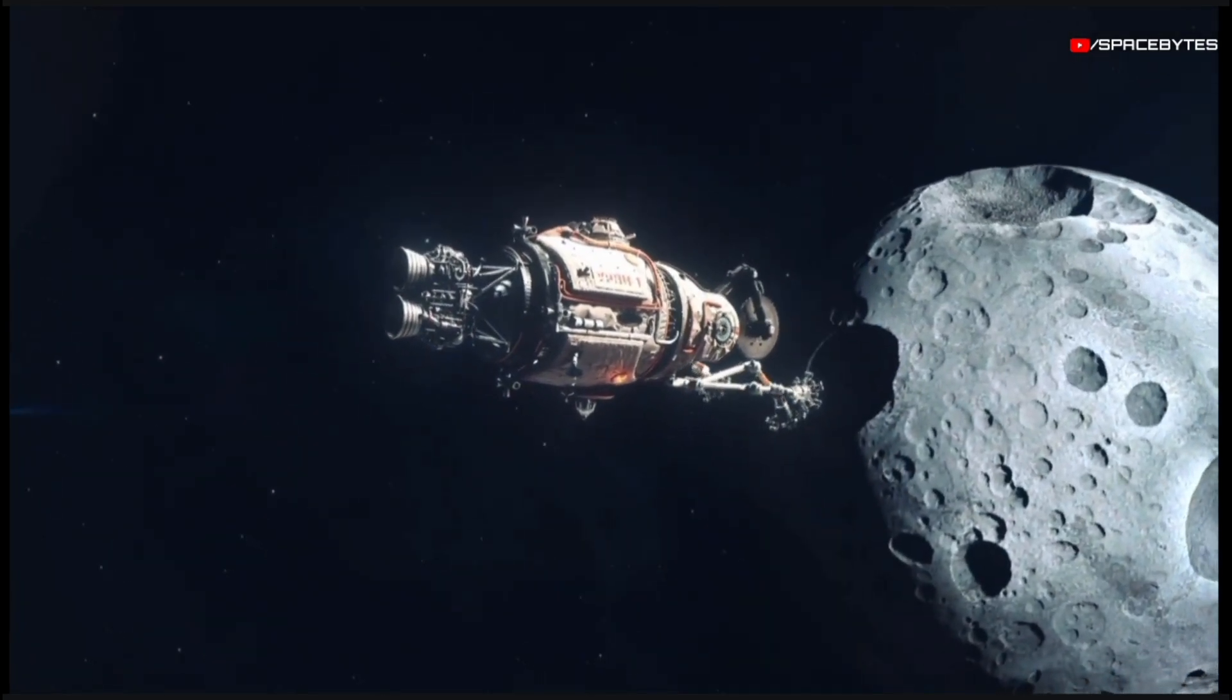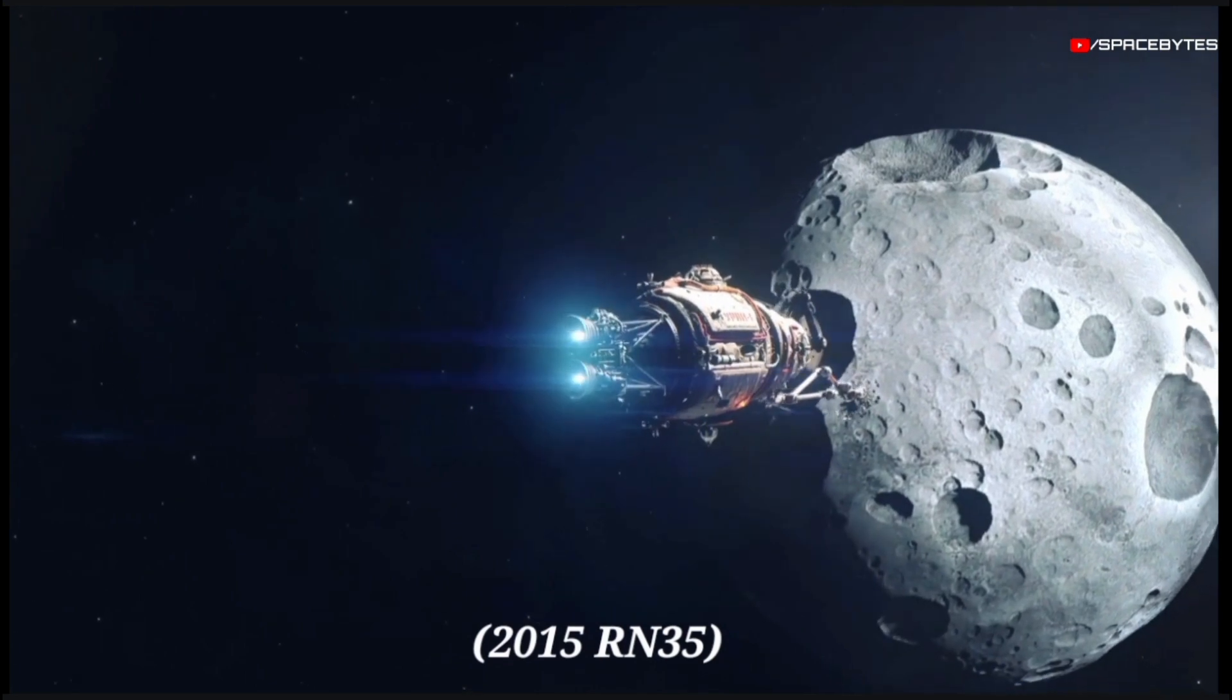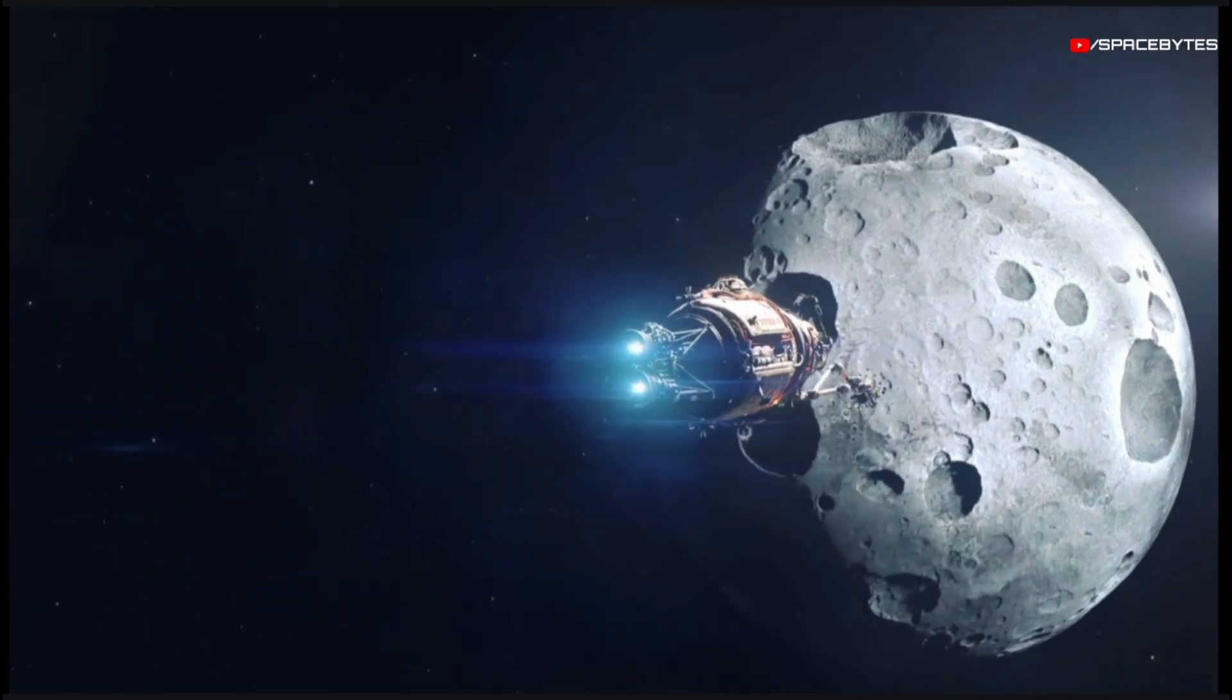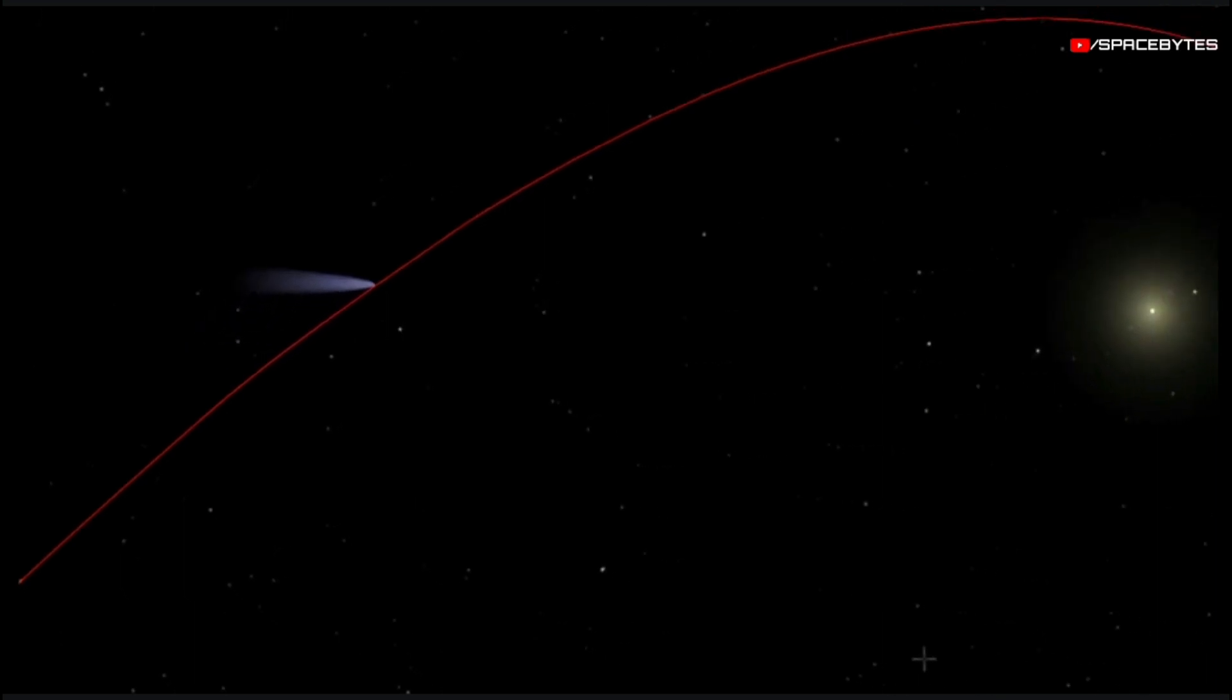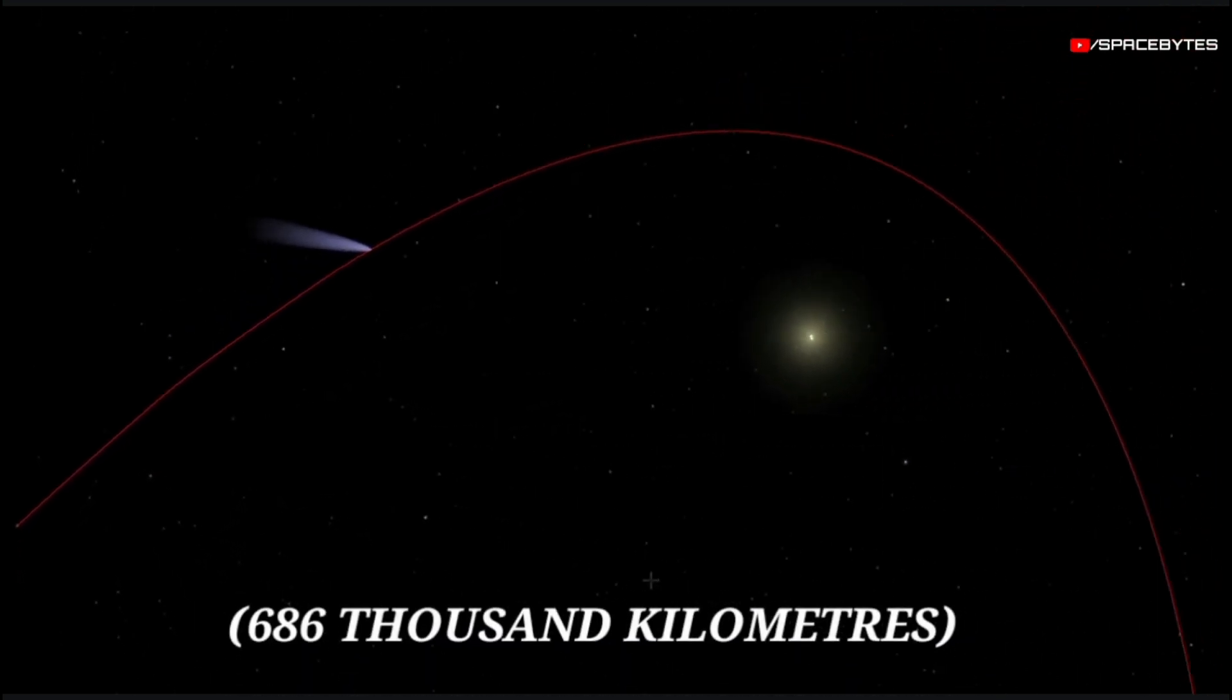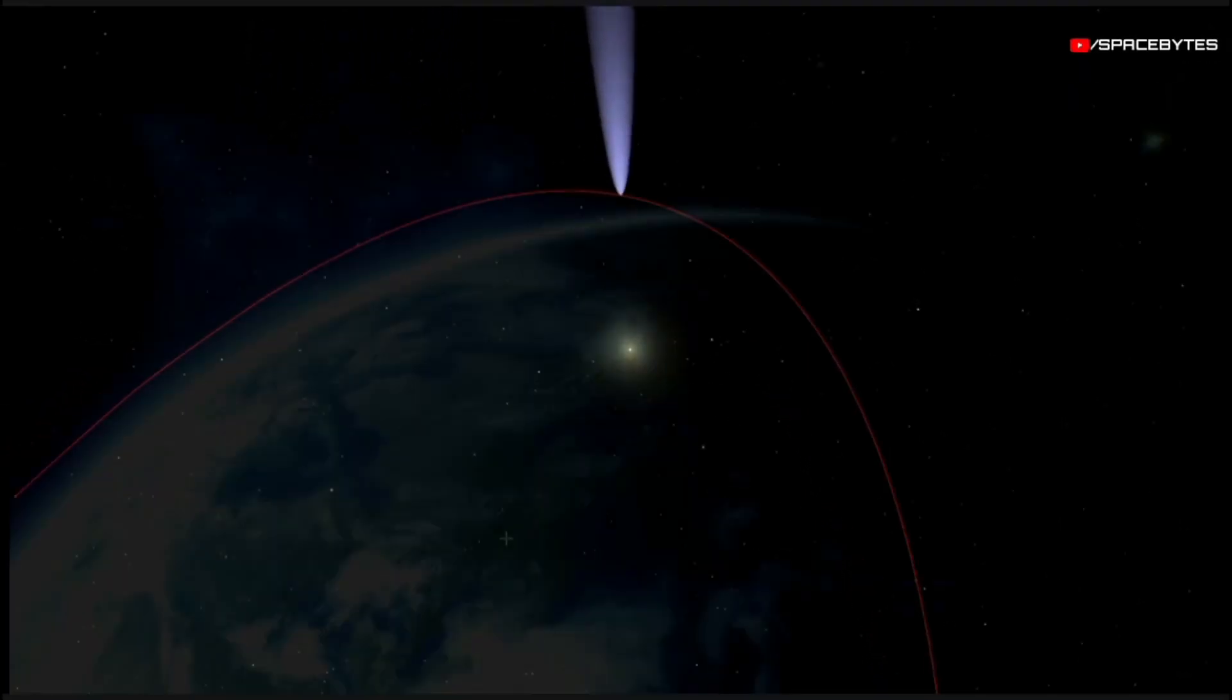On December 15th, a huge asteroid dubbed as 2015 RN35, which is around 500 feet wide, will cross Earth at a distance of 686,000 kilometers at a speed of 21,600 kilometers per hour.